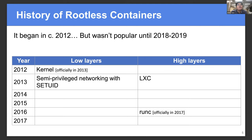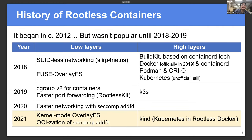Let me show the history of rootless containers. It started about 10 years ago by LXC folks, but this wasn't popular until a few years ago. In 2018, Buildkit started to support rootless mode. We also had Docker, Containerd, and CRI-O, all of them supporting rootless containers that year. We also made patches for Kubernetes to support rootless mode, but the patches are not merged into the Kubernetes upstream at this moment. But K3s already supported rootless mode in 2019.